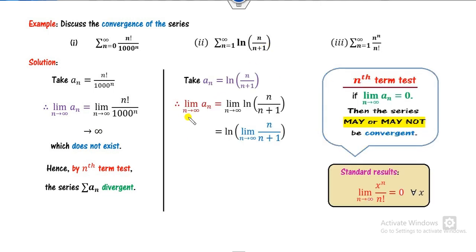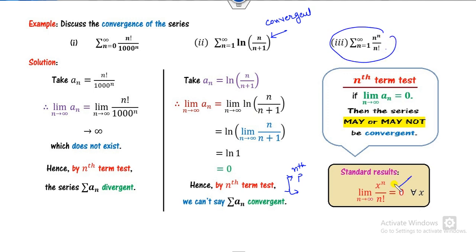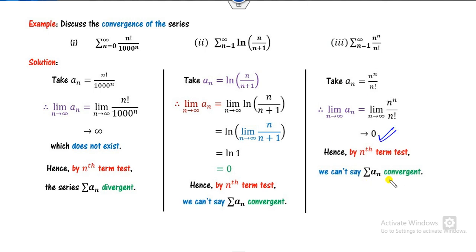For the next example, consider the limit of log(n/(n+1)) as n approaches infinity. Clearly the argument approaches 1, and log(1) is 0. Since the limit is 0, the series may or may not be convergent; we must apply another test such as the nth partial sum sequence or p-test. For the example with e^(-1/n): using the standard result with x equal to n, the limit is 0, so again we cannot determine convergence from the nth term test alone.